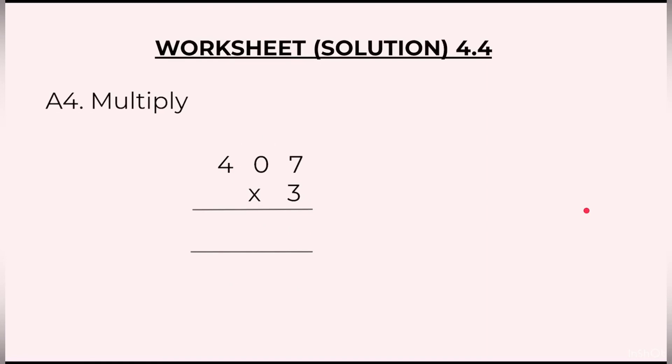Question 4 was 407 × 3. We will start by multiplying 3 into 7, which is 21. 2 at the top, 1 at the bottom. Then 3 zeros are 0 plus 2, 2. 3 fours are 12. So the final answer is 1221.